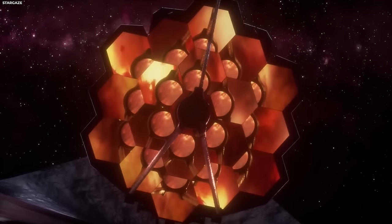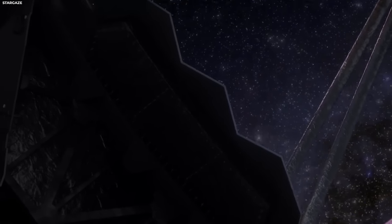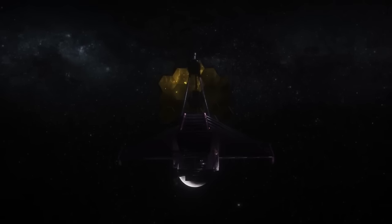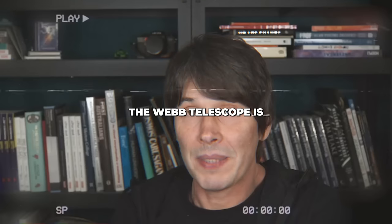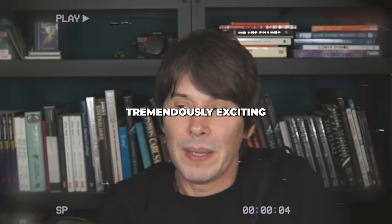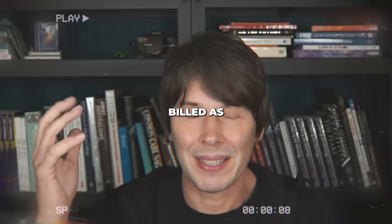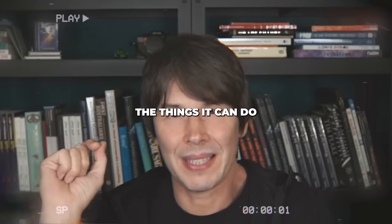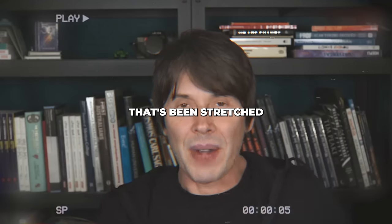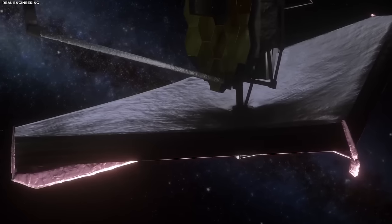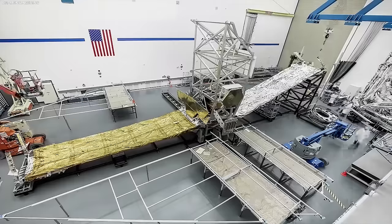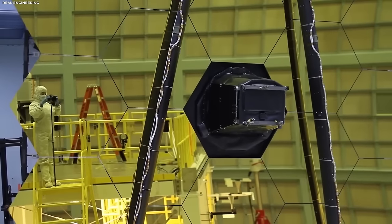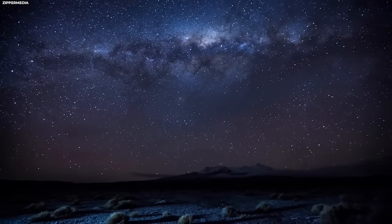The James Webb Space Telescope, or JWST, is nothing short of a marvel in modern astronomical exploration. Named after prominent NASA administrator James E. Webb, this telescope is a major technological advancement over its predecessor, the Hubble Space Telescope. The Webb Telescope is tremendously exciting because it's often billed as a successor to Hubble, which it is, but it's a different and much more powerful instrument. The JWST resulted from a collaborative effort between NASA, the European Space Agency, and the Canadian Space Agency.